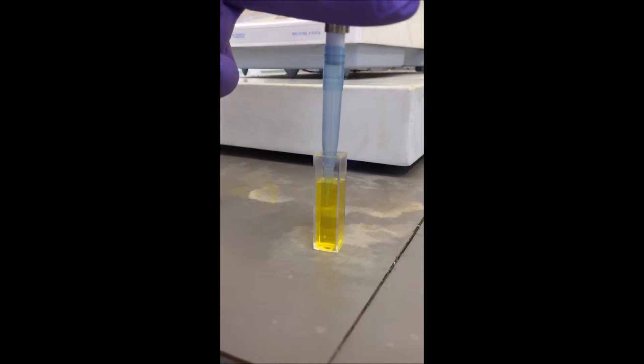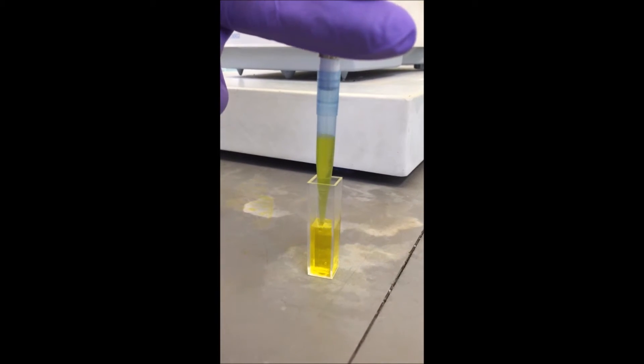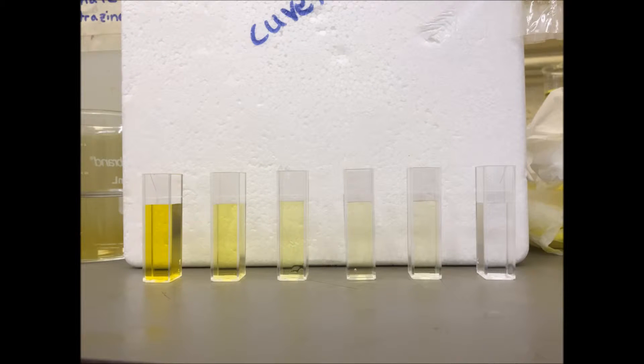Pipette out the desired amount, making sure to evenly mix like shown. Use varying concentrations of tartrazine to make your calibration curve. Your cuvettes should span from pure distilled water to more concentrated tartrazine similar to what is shown.